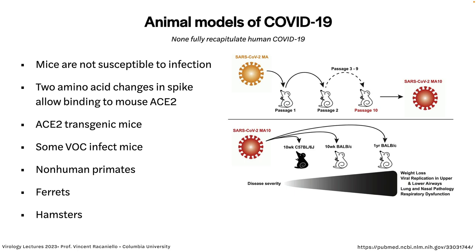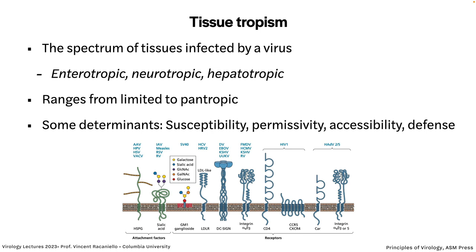We also have non-human primates, which are very expensive and raise ethical concerns. They're not necessarily any better than any other model. We can use ferrets, hamsters, and many others as well. That's where we get a lot of the information about viral pathogenesis — from animal models.